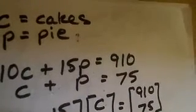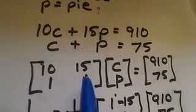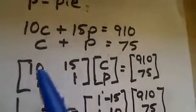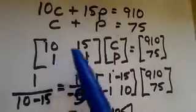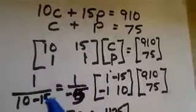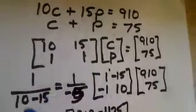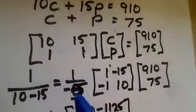Now we're going to turn all of this into a matrix equation. We've got the coefficient matrix here: 10, 15, 1, and 1. Our variables are c and p, and our constant matrix is 910 and 75. We're going to find the inverse. We multiply the main diagonal from left to right, and that's going to be 10. We subtract the product of the opposite diagonal, which is 15. So 10 minus 15 is negative 5.